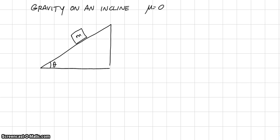To analyze the motion of this object, we want to plug into: acceleration equals the sum of the forces over the mass. The first thing we do is draw a free body diagram of the object. The forces on the object are the weight, or the force of Earth's gravity, and the force of the surface of the incline, also called the normal force.